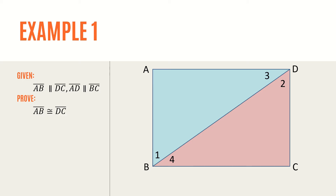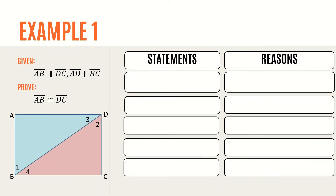Now, let us use the two-column proof to prove that side AB is congruent to side DC. The statements are all arranged in one column under the heading 'statements.' Opposite the statements are their corresponding reasons, also arranged in one column under the heading 'reasons.' The reason for each logical statement is based on established definitions, postulates, theorems, corollaries, and properties.